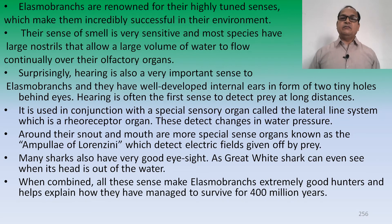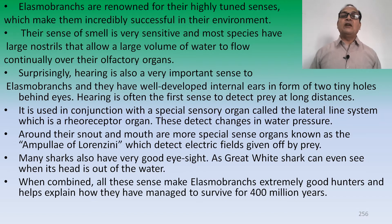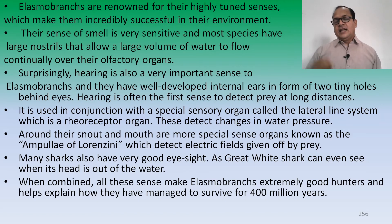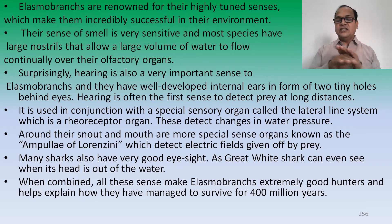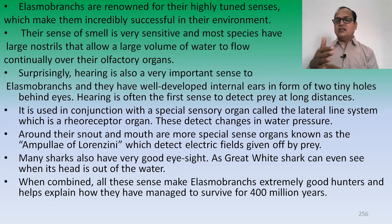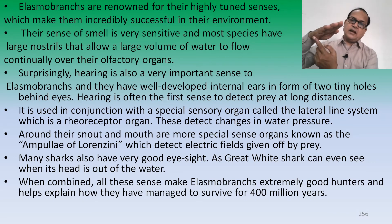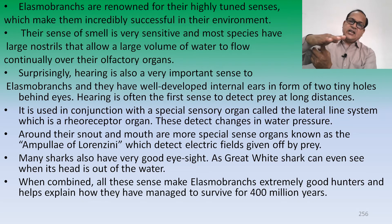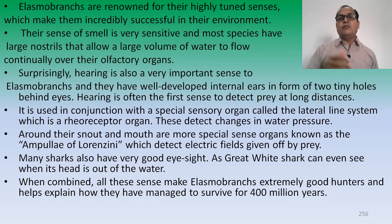Around the snout and mouth are more special sense organs known as the ampullae of Lorenzini, which detect electric fields given off by prey. The ampullae of Lorenzini are found in the snout region, as the mouth is positioned back on the ventral side while the snout is far forward.